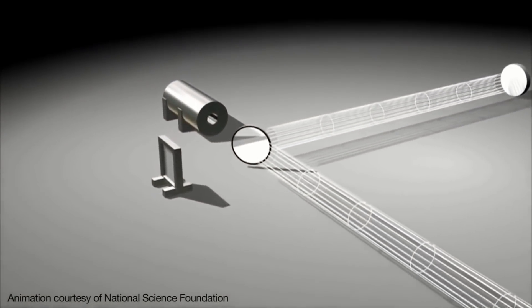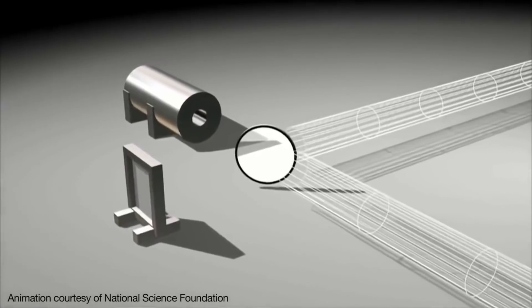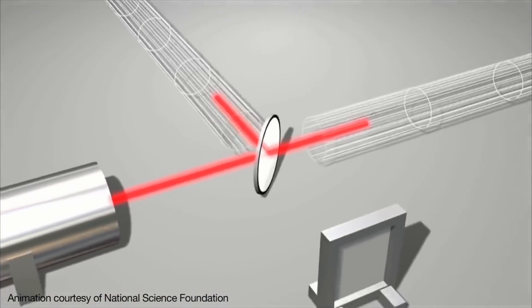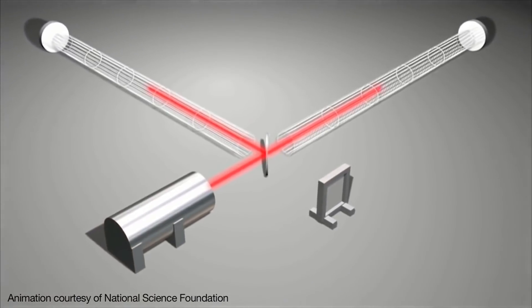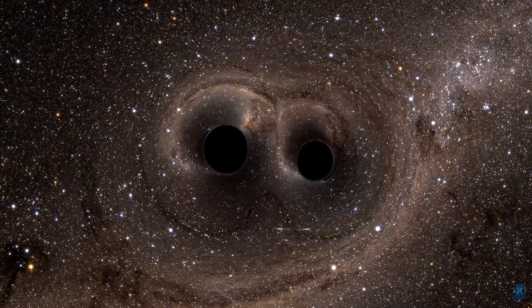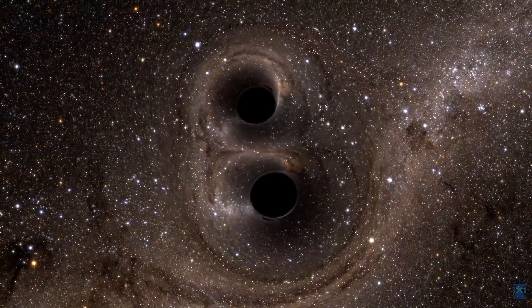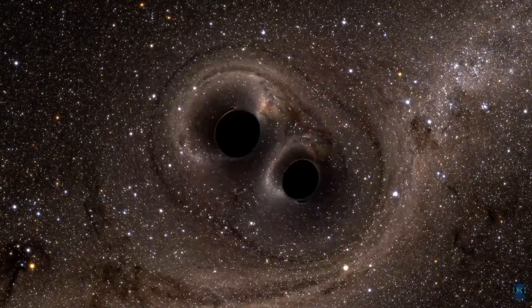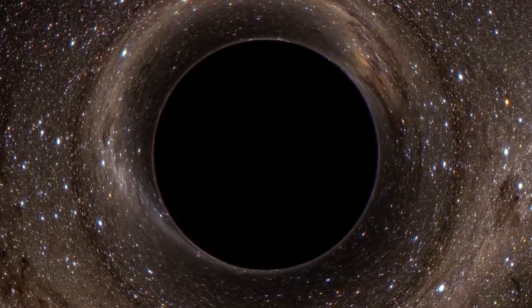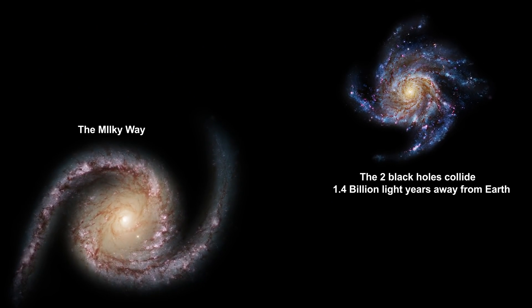LIGO, this laser interferometer gravitational wave observatory, took headlines a few years ago when it detected the first ripples in the fabric of space. It detected them from two black holes that were 1.4 billion light years away, rotating around each other, going near the speed of light, slamming into each other, creating a tidal wave in the fabric of space that rippled outward at the speed of light.